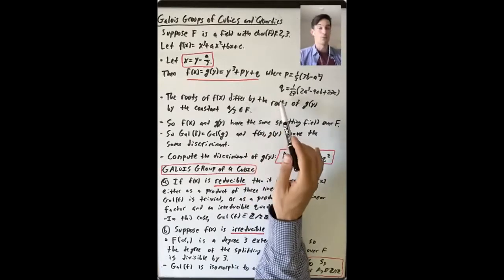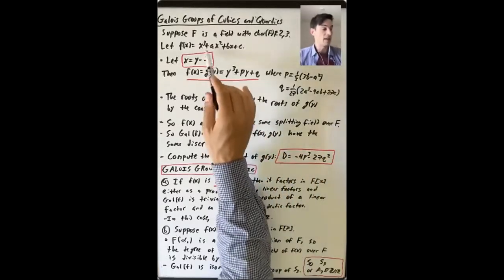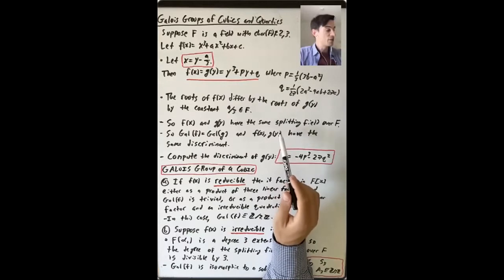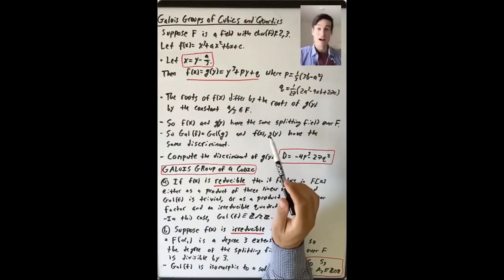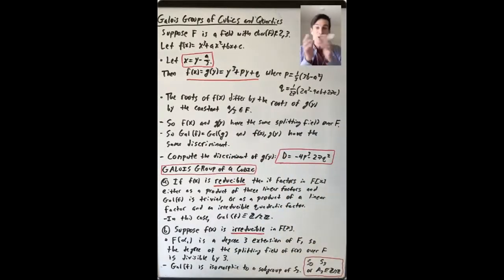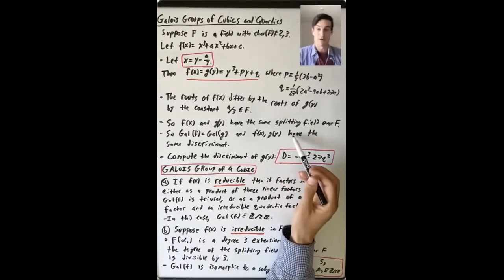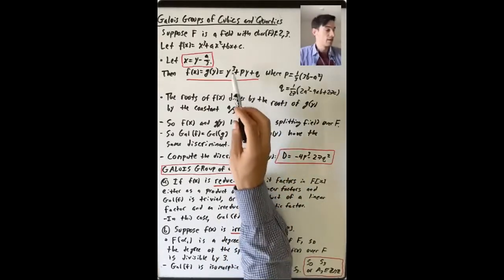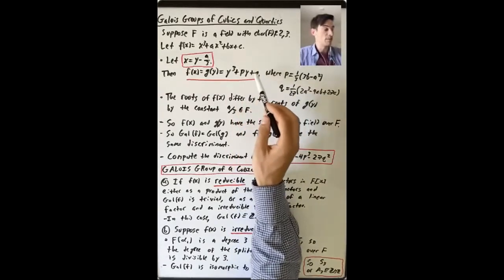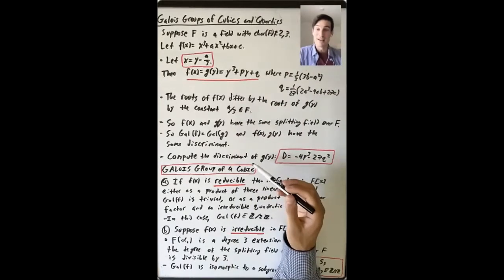Also, since the roots of f(x) and g(y) only differ by a over 3, which is in F, f(x) and g(y) have the same discriminant. What is the discriminant? It's this product where you take differences of the roots and square them. So if the roots of one polynomial are a/3 off from the roots of the other — each root is being translated by a/3 — when you take the difference, that a/3 cancels out. So you get the same discriminant.